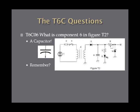What is component six in figure T2? Here's figure T2 that you'll see on the exam. Component six is a capacitor — you can tell it's a capacitor because it has the two plates. Remember, a capacitor is made out of two plates separated by an insulator. Just look at that symbol and remember it's a capacitor.